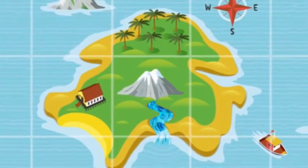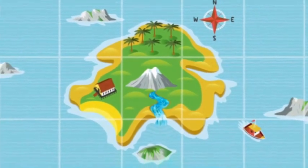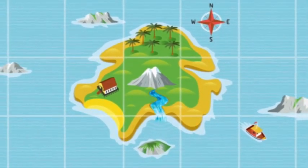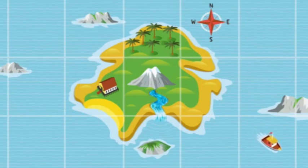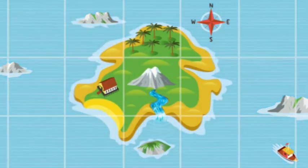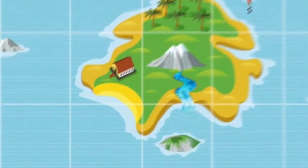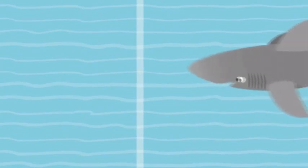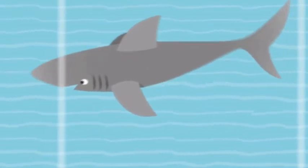This is a map. What can you see on the map? There's an island and some sea. The island is green and the sea is blue. Look at the sea — what lives in the sea? A shark.